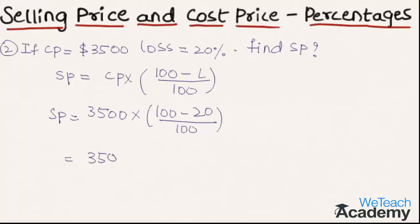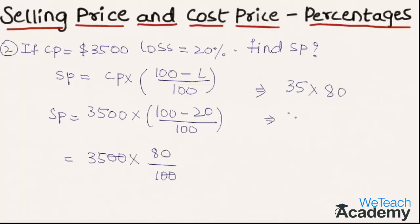Simplifying: 3500 × 80 ÷ 100. Cancelling the two zeros in the numerator and denominator, and multiplying 35 × 80, we get the selling price as $2,800.